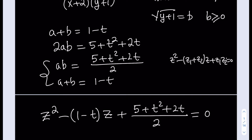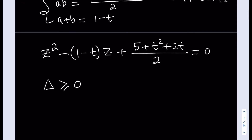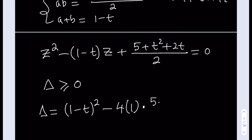For real solutions, the discriminant delta must be greater than or equal to 0. The discriminant is b squared minus 4ac, so that's (1 minus t) squared minus 4 times (5 plus t squared plus 2t) over 2. Simplifying — the 2 cancels giving a factor of 2 — we get 1 minus 2t plus t squared, then distributing the negative 2: minus 10 minus 2t squared minus 4t. So the discriminant equals negative t squared minus 6t minus 9.